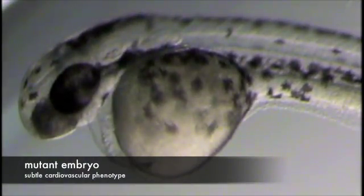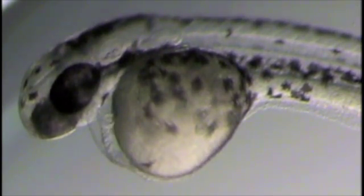And here is an embryo of similar age that has been injected with a morpholino to block a gene that controls the rhythmicity and force of contraction within the heart.